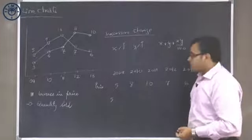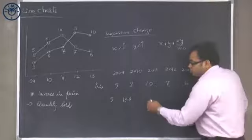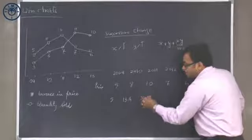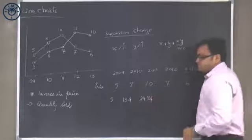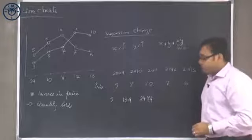X plus y plus xy upon 100, so 5 plus 8, 13 plus 5 into 8 is 40, 40 upon 100 is 0.4, so 13.4. Next year, it increases by 10 percent, so 13.4 plus 10 is 23.4 plus 1.34, so that will become 24.74.